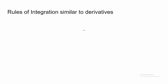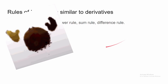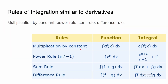So what are some rules of integration that are similar to derivatives? There's multiplication by constant, power rule, sum rule, and difference rule. If you want to take the integral of a function multiplied by a constant, you can just bring the constant out of the integral. So the integral of c·f(x) dx is just c times the integral of f(x) dx. We have the power rule, which is just the inverse of the power rule with derivatives. We also have the sum rule and difference rule, meaning that if you have two functions added together or subtracted from one another, you can just treat them separately.